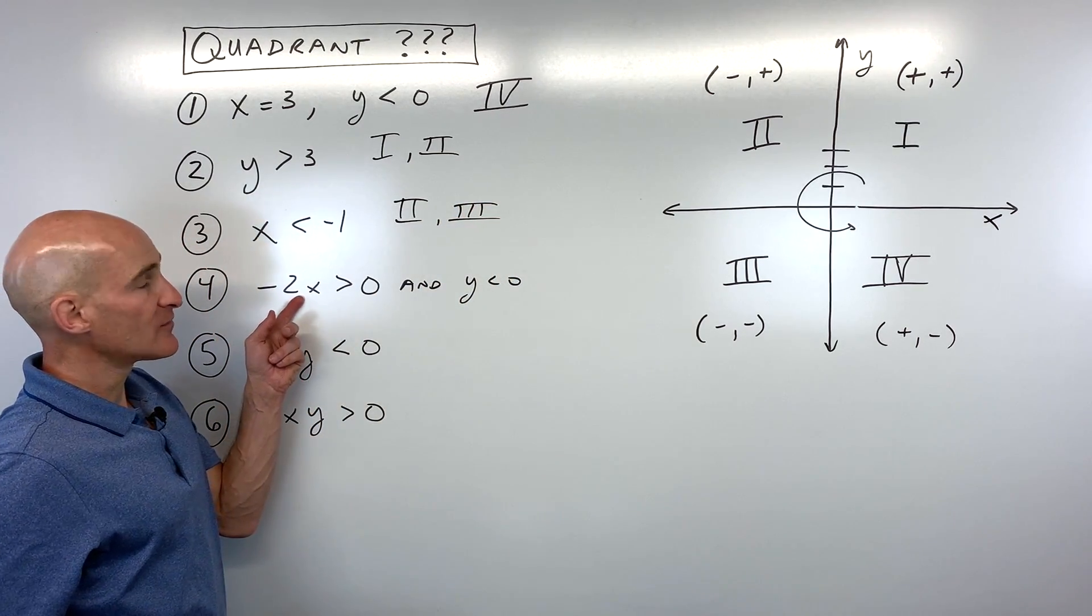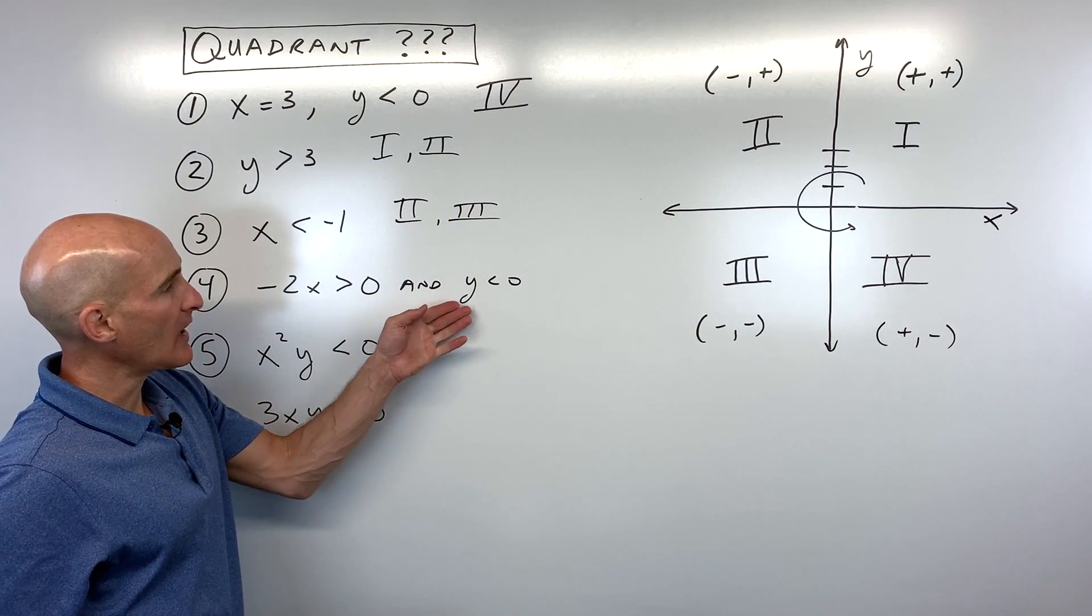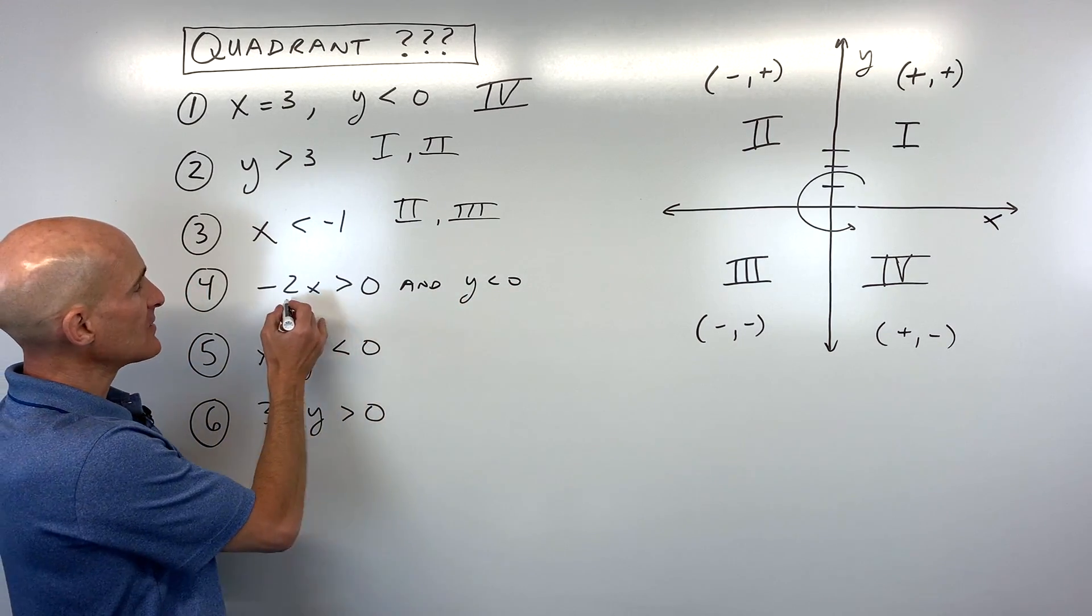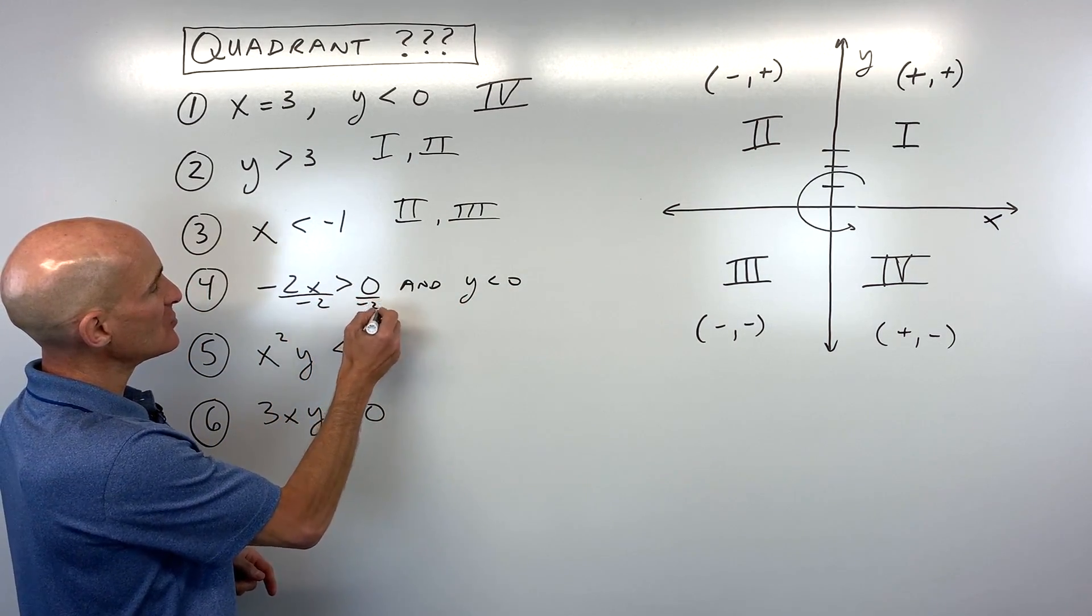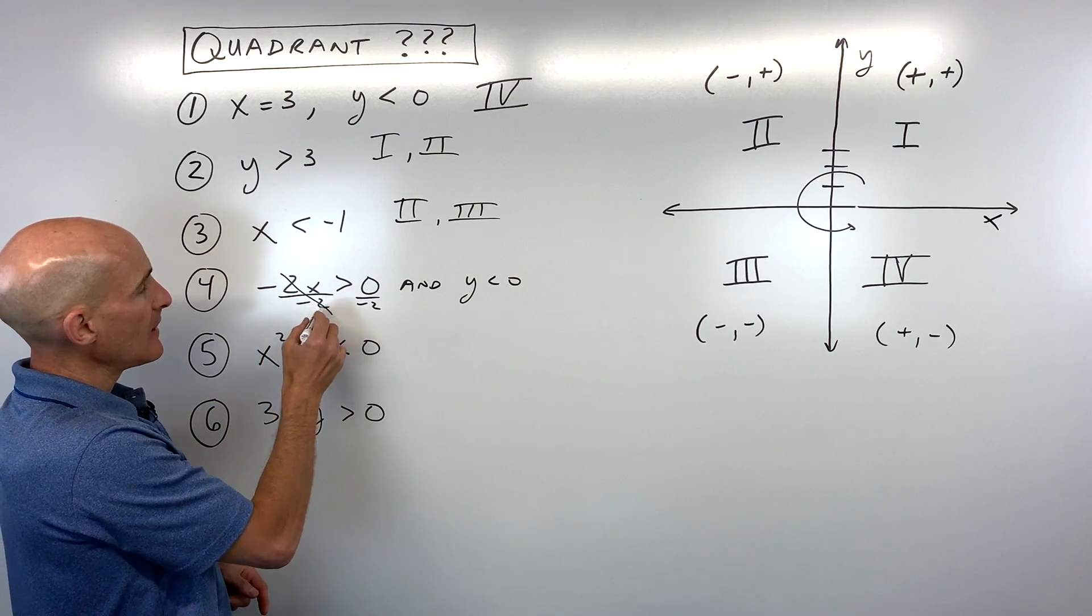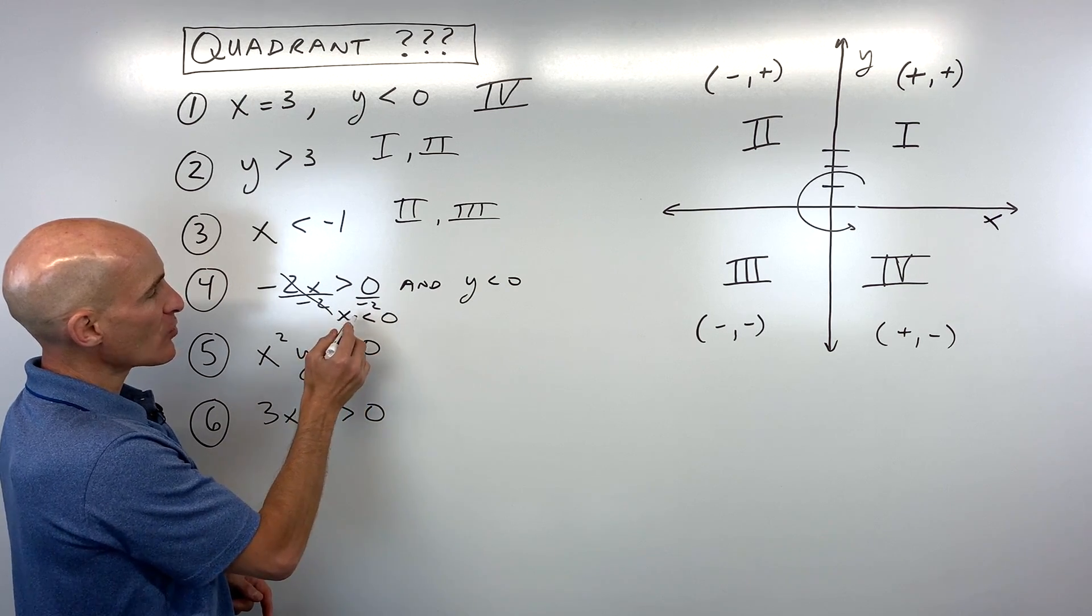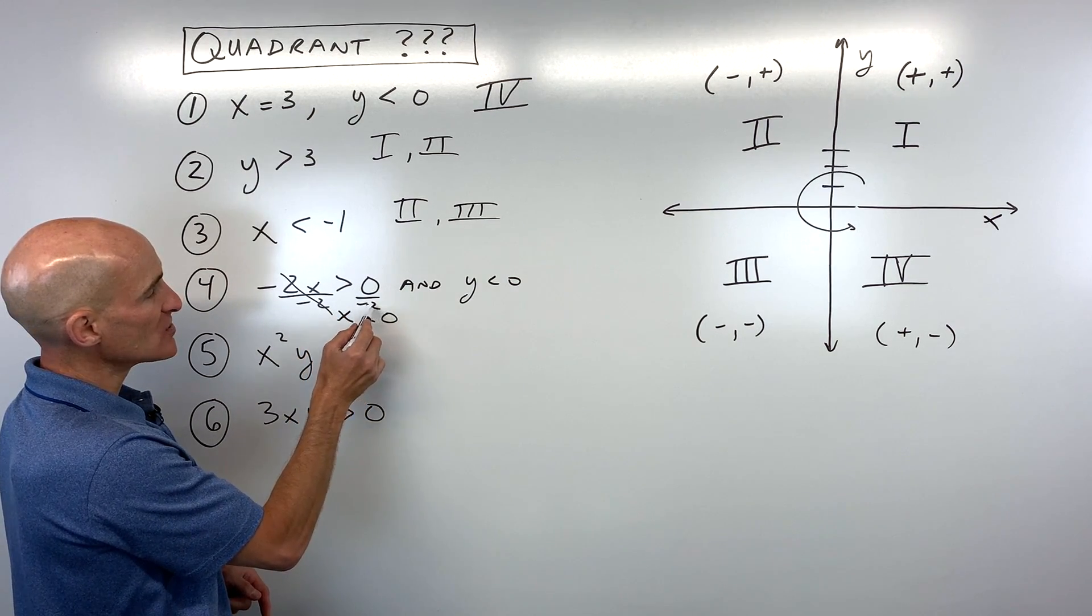For number four, we have negative two x is greater than zero and y is less than zero. Well, let's solve this one here for x. If we divide both sides by negative two, what happens to that inequality sign? Well, remember, when you divide by a negative, the inequality sign changes direction.